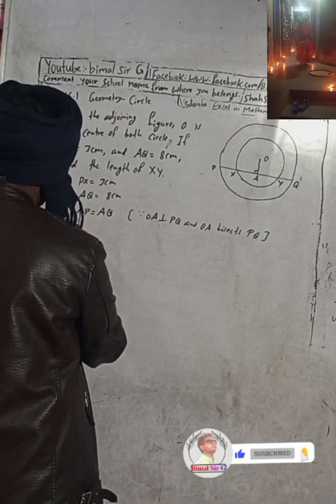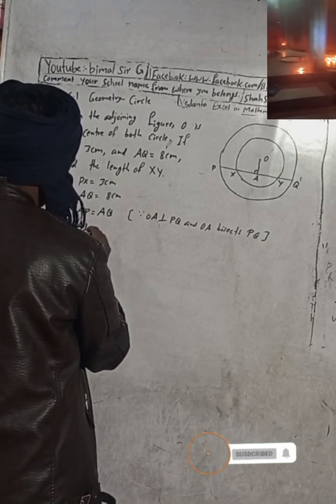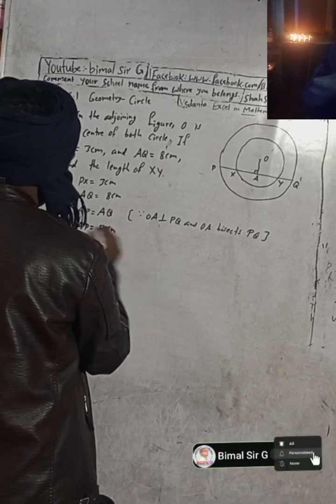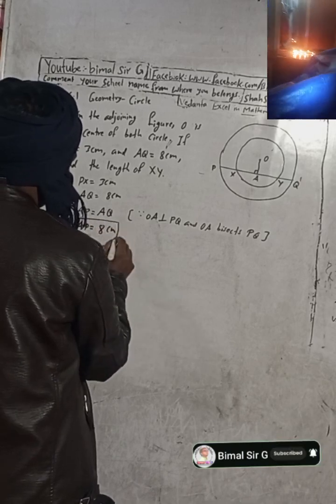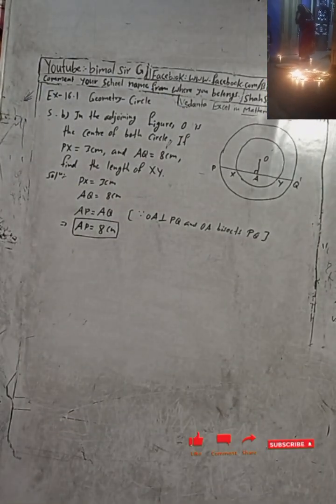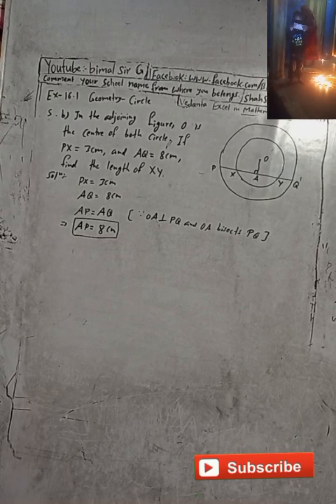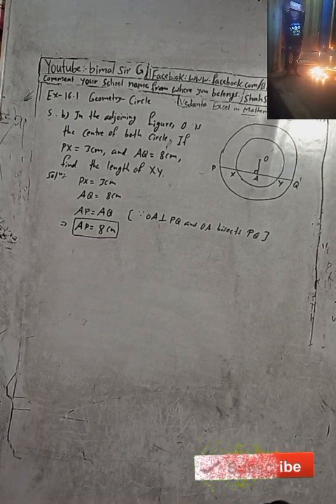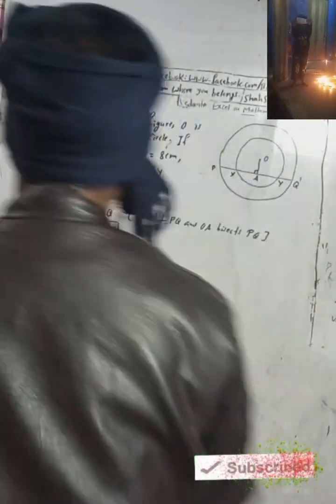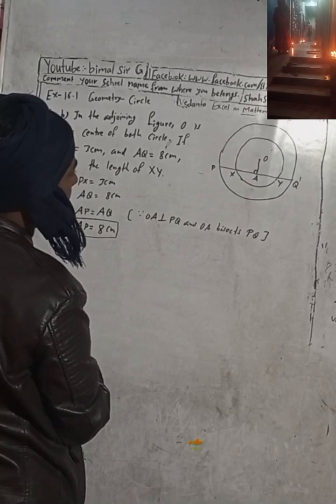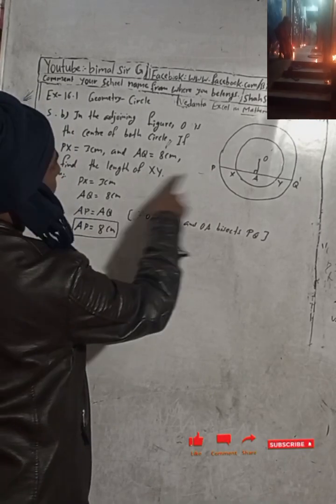So AP is equal to AQ, which is 8cm. We now have AP. Next, we have to find XY.